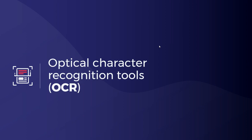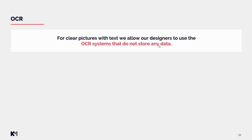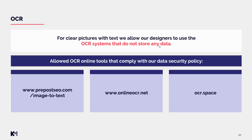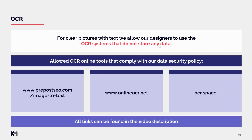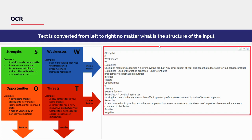Now we will discuss the usage of Optical Character Recognition tools, or OCR. This is an online tool that can help you recreate text by converting a picture input with text into editable text, so you don't have to recreate it fully. For clear pictures with text, designers are allowed to use OCR systems that do not store any data. For handwritten notes, there is a high chance OCR will not work. You can find links to allowed OCR tools that comply with our data security policy under the video in the description.